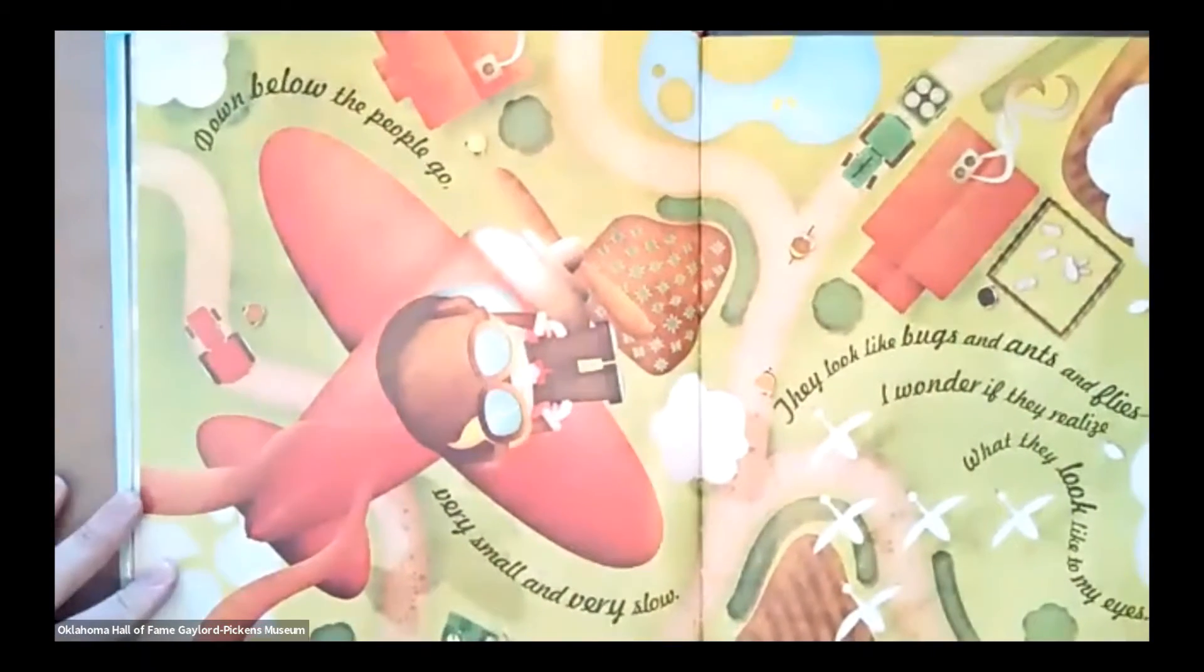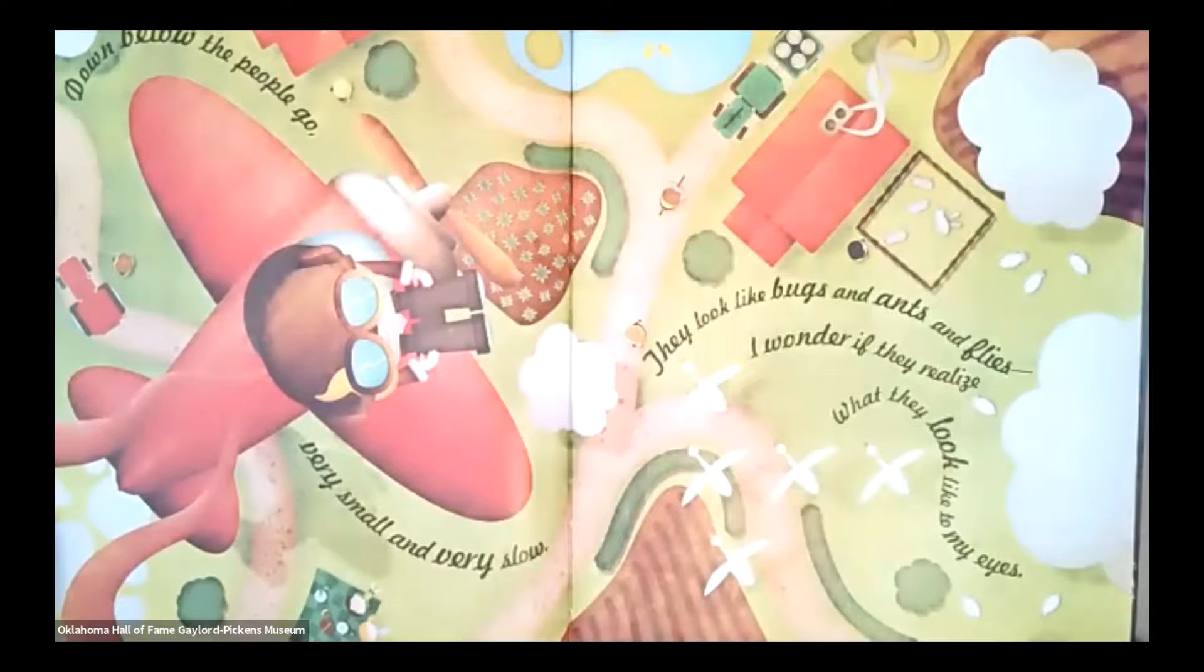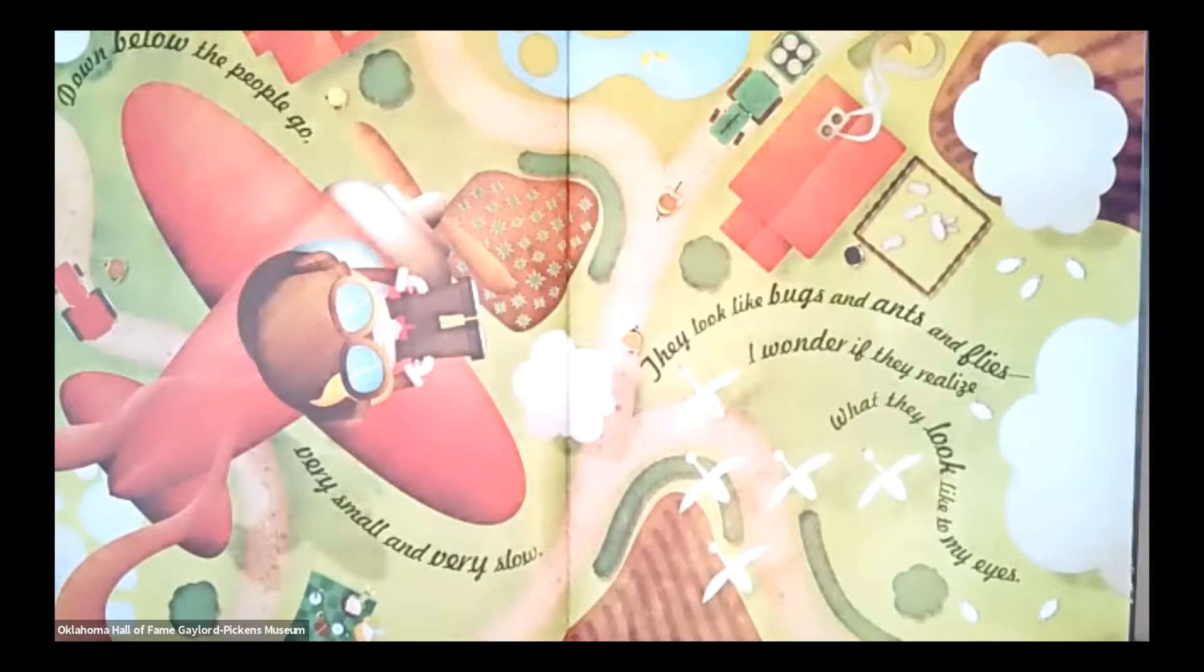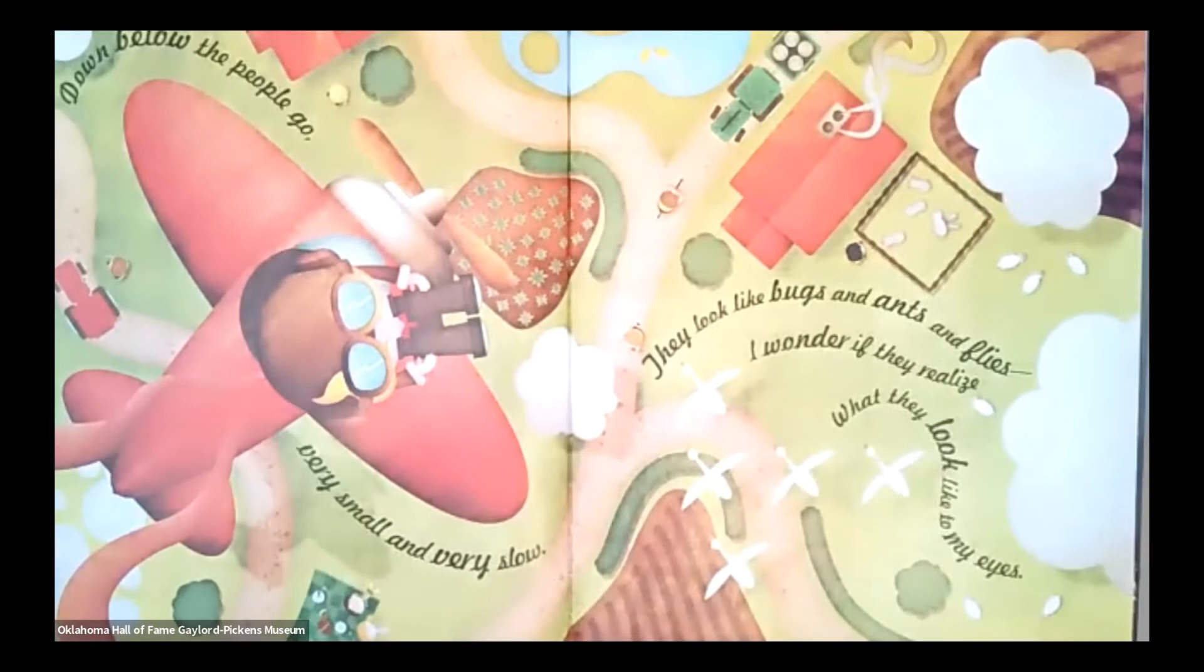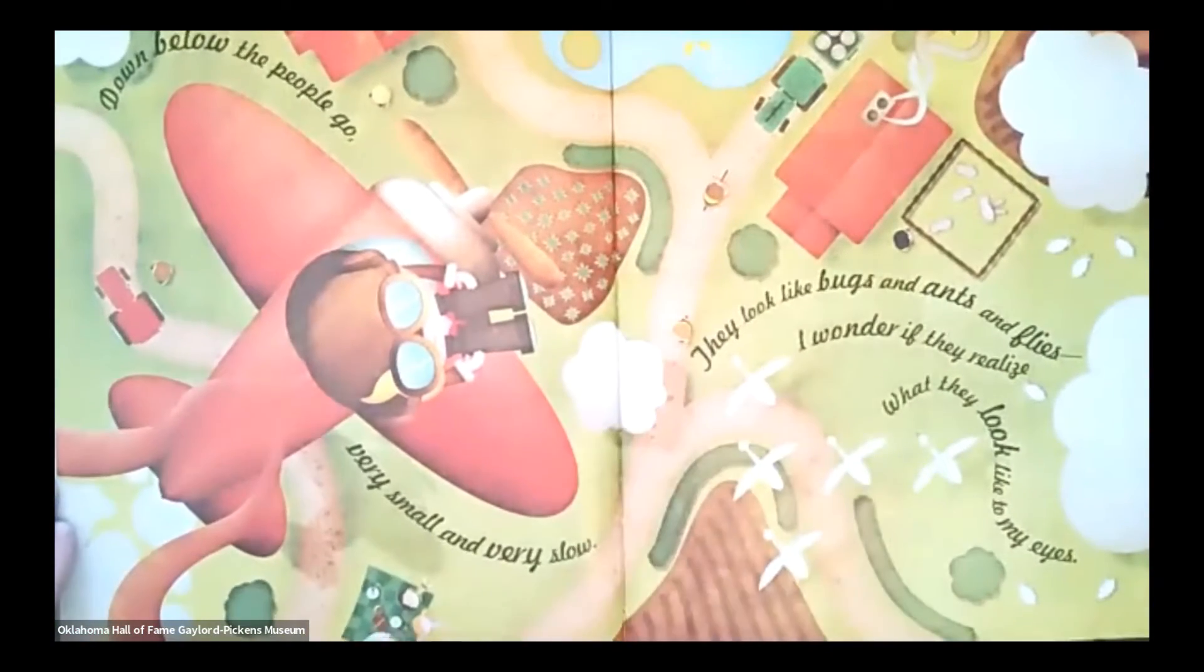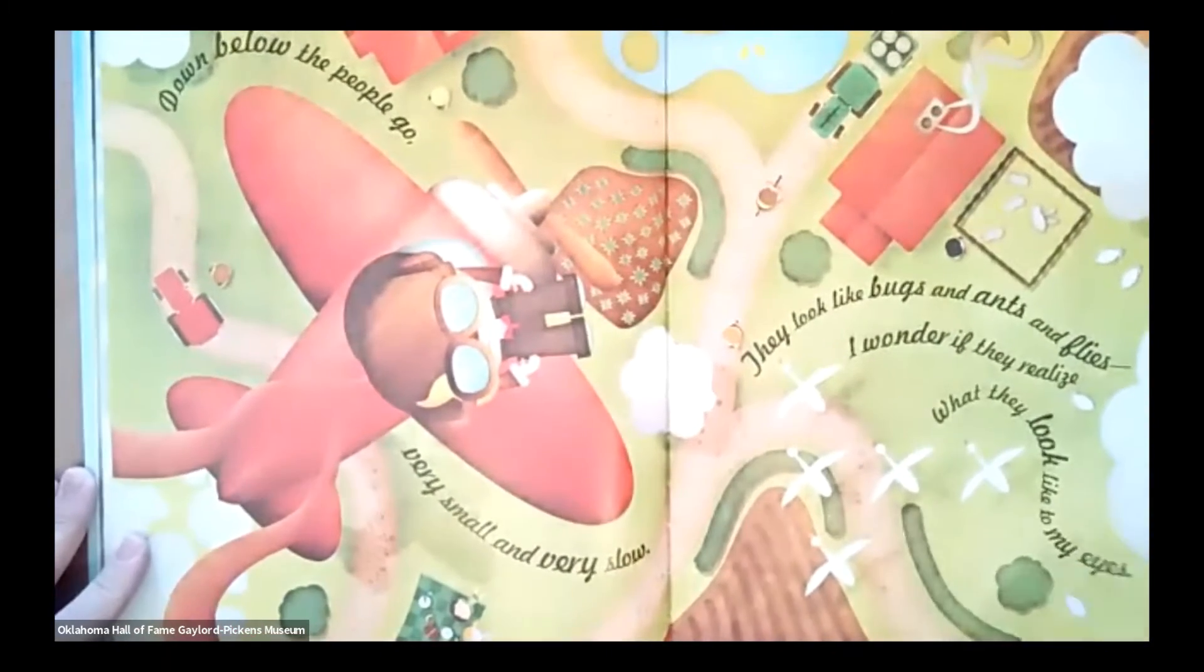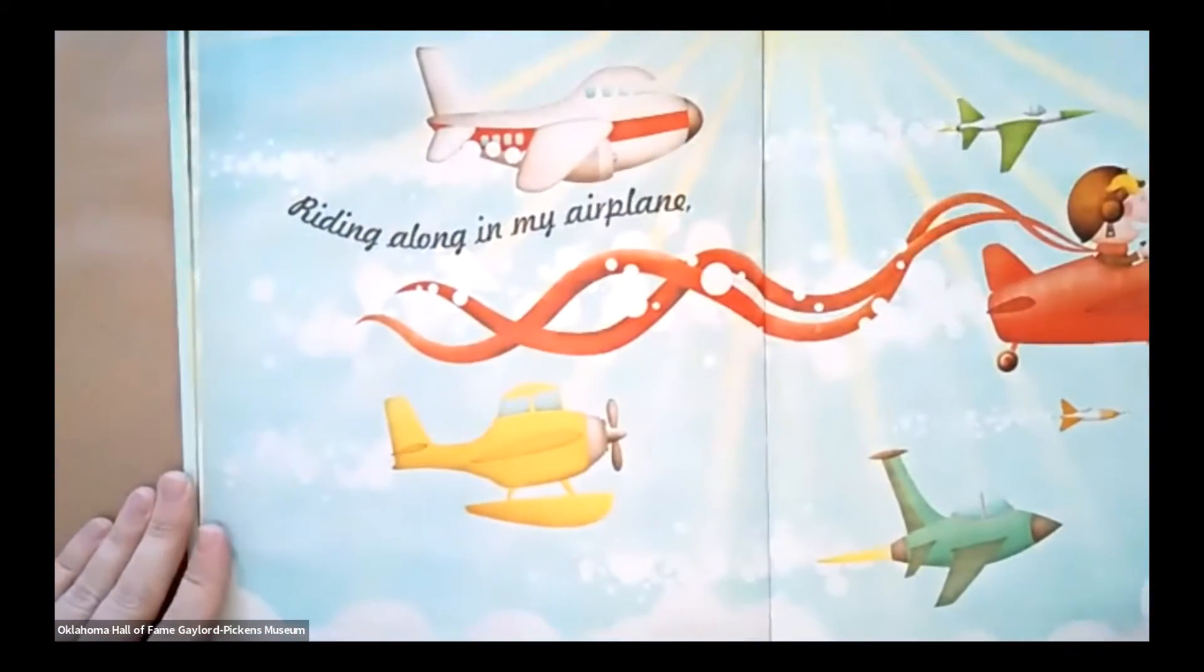Down below, the people go very small and very slow. They look like bugs and ants and flies. I wonder if they realize what they look like to my eyes. So there's the people all down below. That person looks like they're riding the bike. There's even a picnic down here. And they all look like little bugs.